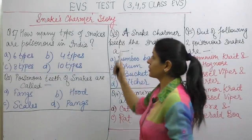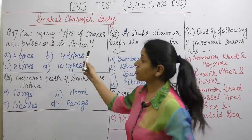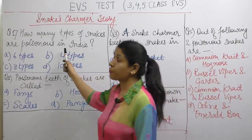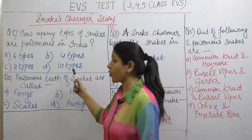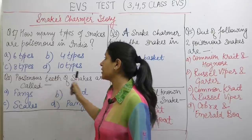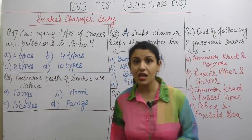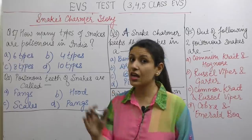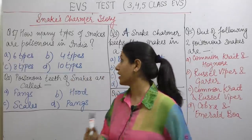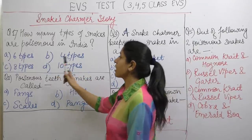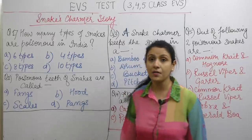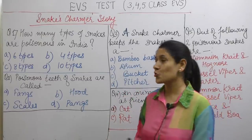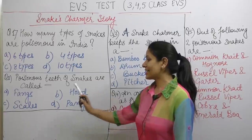Let's write the next chapter — Chapter 2, the snake chapter. Question: How many types of snakes are poisonous in India? 6 types, 4 types, 8 types, or 10 types? Next question: Teeth of snakes that are poisonous — what are they called? Fangs, hood, scales, or pants?